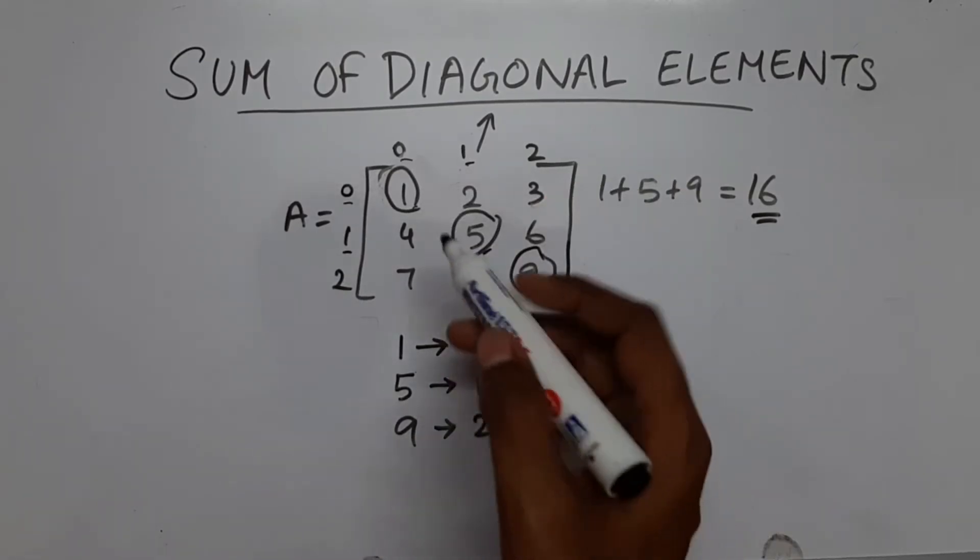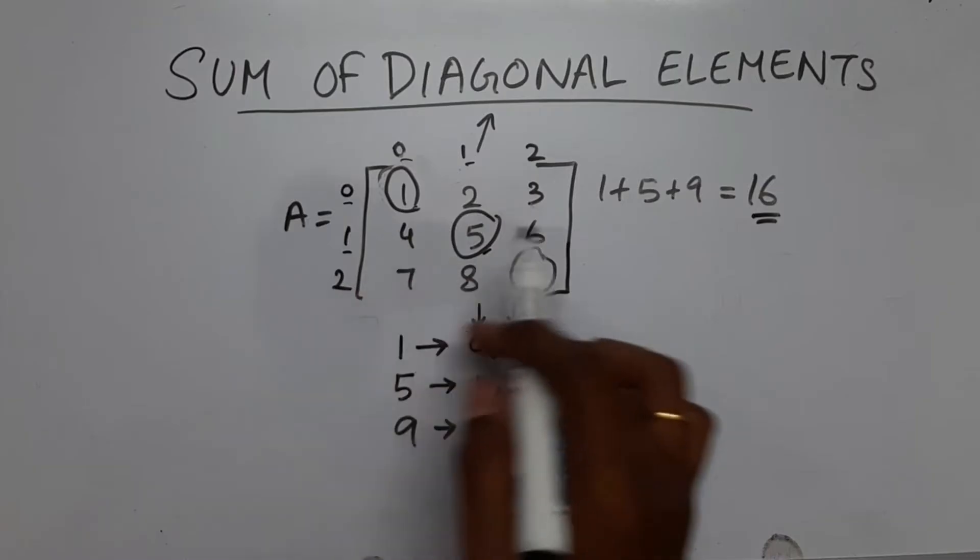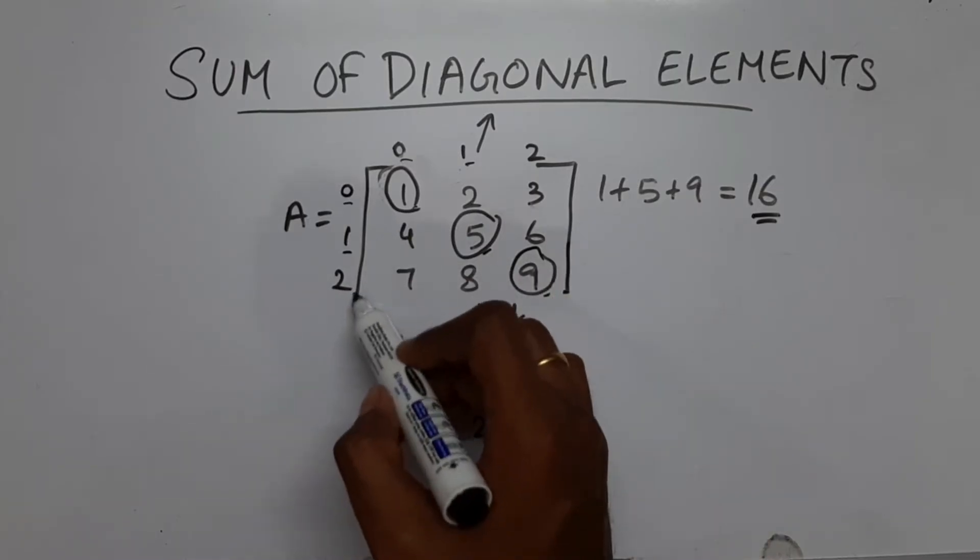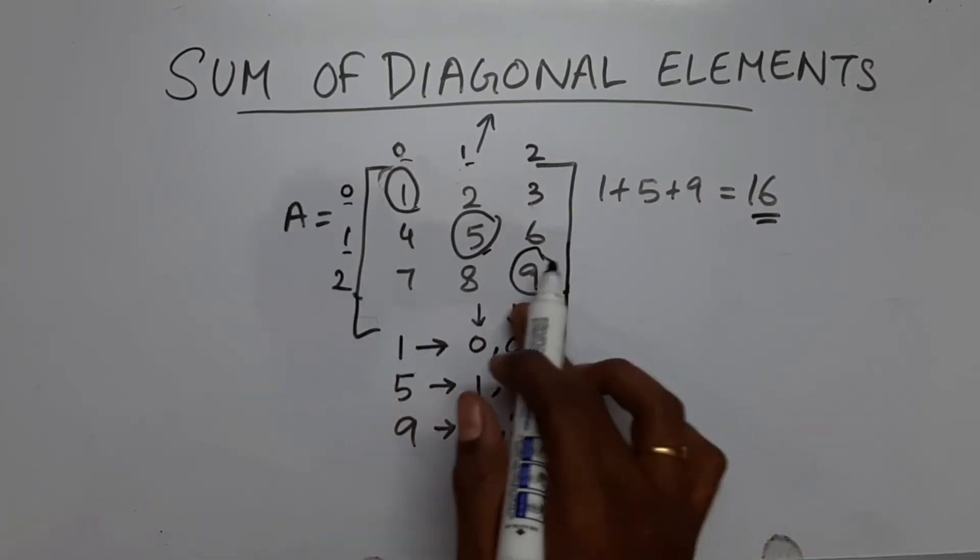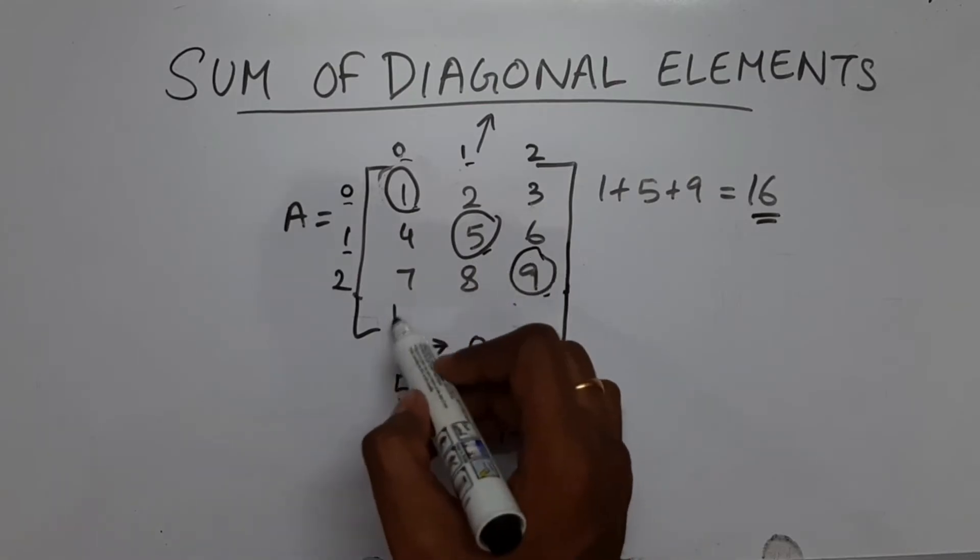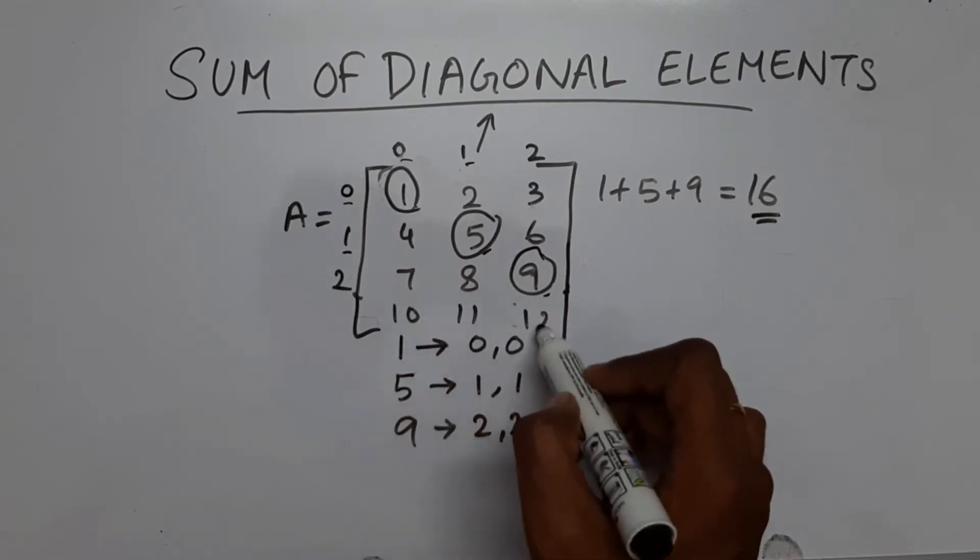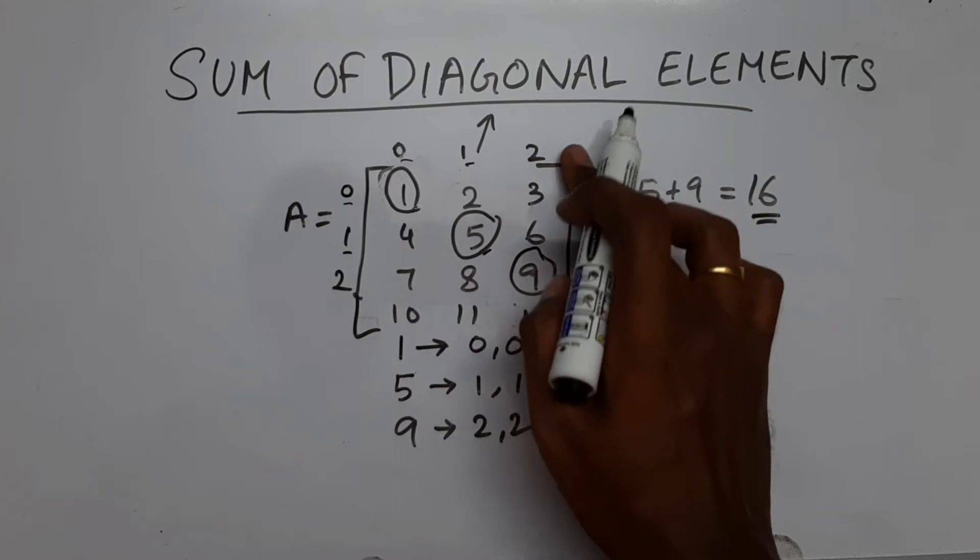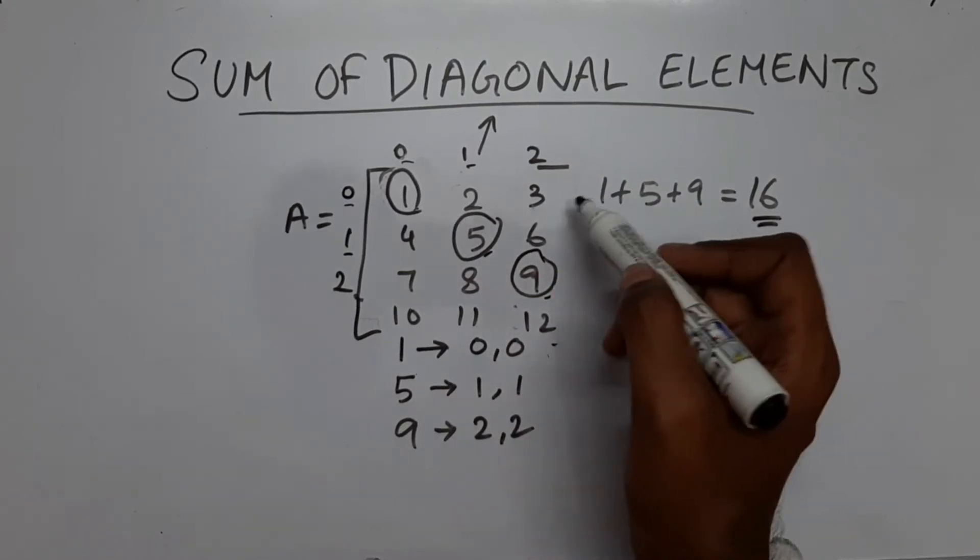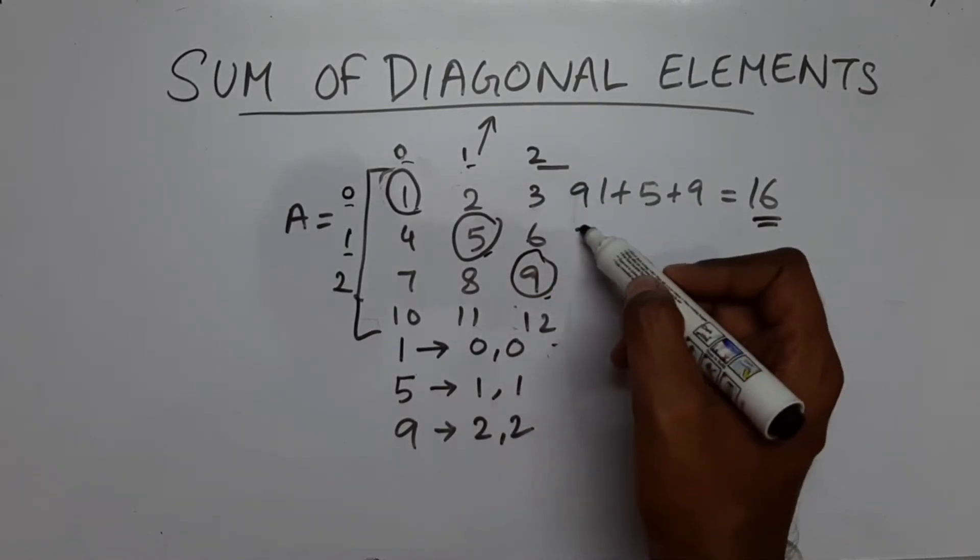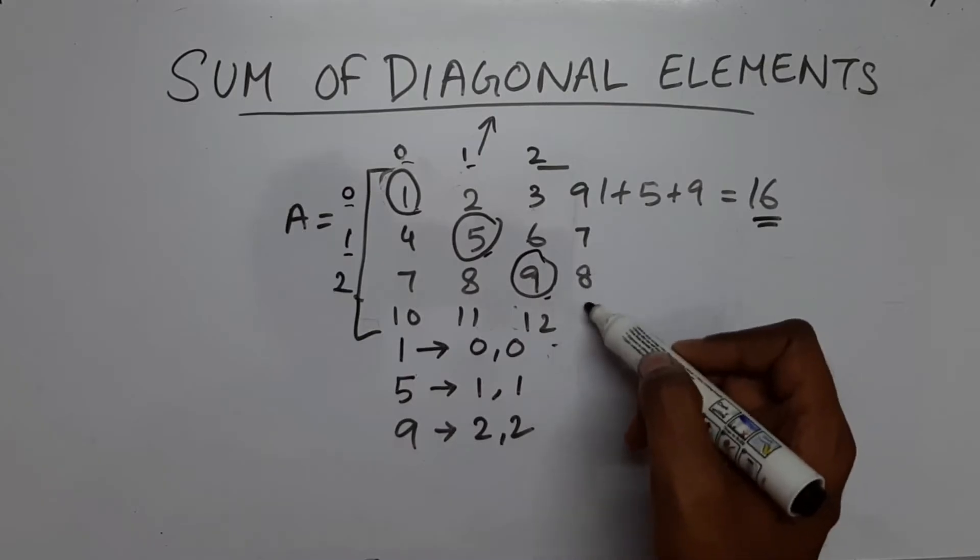So this is what we observe. So let's say this array was 4 x 4. So let's say there were more elements over here: 10, 11 and 12, 4 x 4. So let me add some values here: 9, 7, 8 and 6.